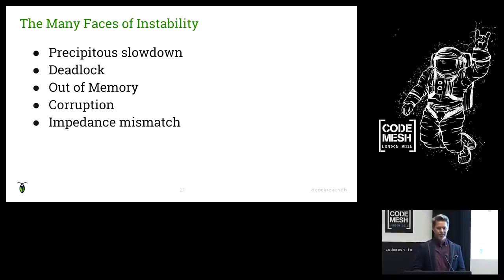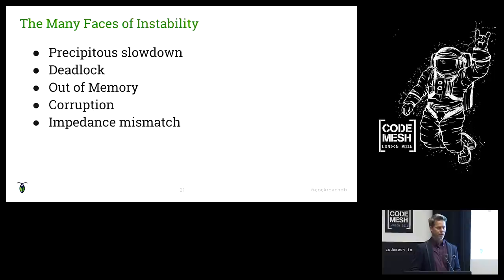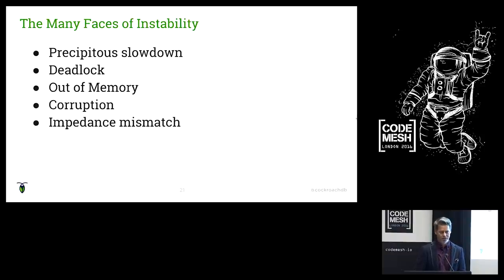What caused instability technically? The symptoms included precipitous slowdown — sometimes so slow it was indistinguishable from deadlock. Also out-of-memory errors, which was how our Go programs would panic. The Go programs were otherwise quite stable — not random things like null pointer exceptions, which don't happen much in Go. Corruption was the really insidious one, hard to find. And impedance mismatch — issues with some of the technologies we chose that, in hindsight, may not have been the right ones.